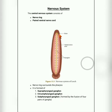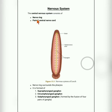Hello students, today in this video we will see about two organ systems of leech. The first one is the nervous system and the second one is the excretory system of leech. The central nervous system of leech includes two parts: the nerve ring and the paired ventral nerve cord.